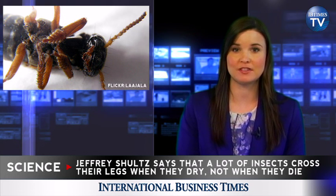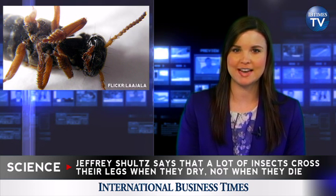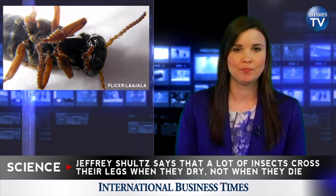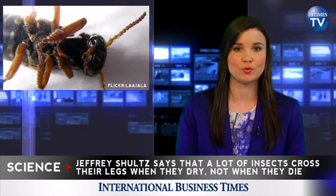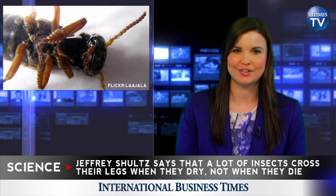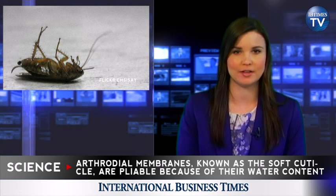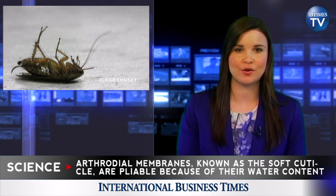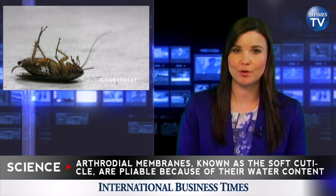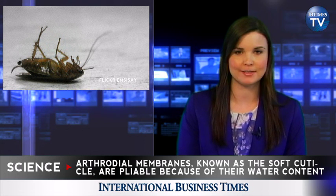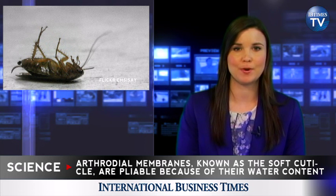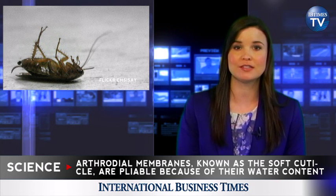However, post-muscle stiffness might not be the only answer. Jeffrey Schultz, an entomologist at the University of Maryland, believes that a lot of insects cross their legs when they dry post-death, not when they actually die. The key, Schultz says, may lie in a structure called the arthrodial membranes. Arthrodial membranes, also known as the soft cuticle, are pliable because of their water content. When an insect dies, this cuticle would dry and contract, flexing the bug's joints into the cross-legged position.